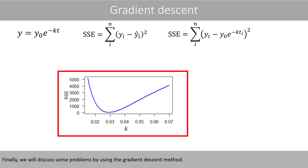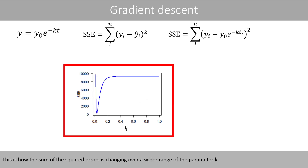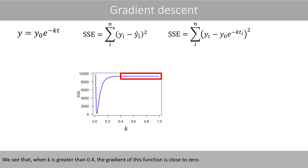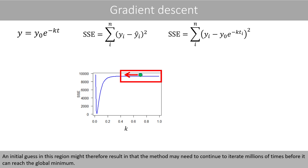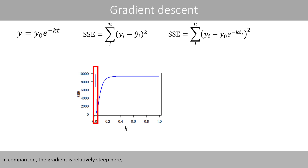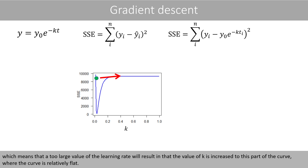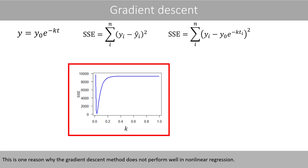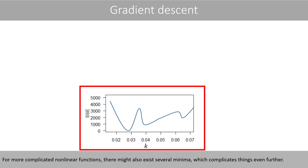Finally, we'll discuss some problems with using the gradient descent method. Looking at how the sum of the squared errors changes over a wider range of parameter k, when k is greater than 0.4, the gradient of this function is close to zero. An initial guess in this region might result in the method needing to iterate millions of times before reaching the global minimum. In comparison, the gradient is relatively steep elsewhere, meaning too large a learning rate will push the value of k to a flat region of the curve. For more complicated nonlinear functions, there might also exist several minima, which complicates things even further.